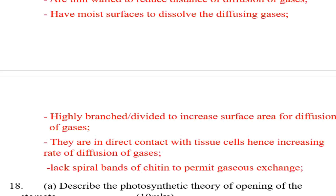Number five: they lack spiral bands of chitin to permit gaseous exchange.